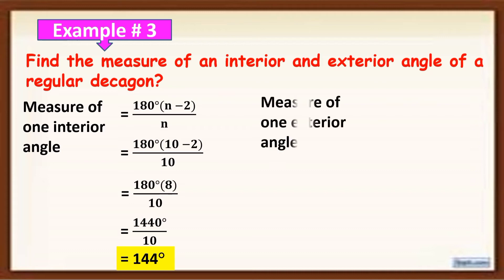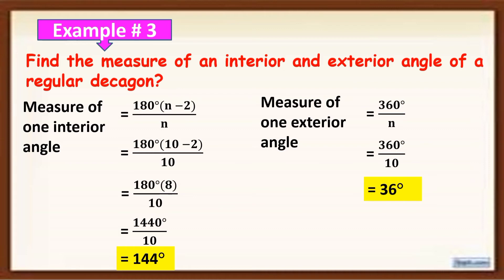Now let us get the measure of one exterior angle of a regular decagon. To get the measure of one exterior angle of a regular polygon, we use the formula 360 degrees over n, where n is the number of sides. We substitute 10 for n since a regular decagon has 10 sides. So it becomes 360 degrees over 10, which simplifies to 36 degrees. Therefore, the measure of one exterior angle of a regular decagon is 36 degrees.